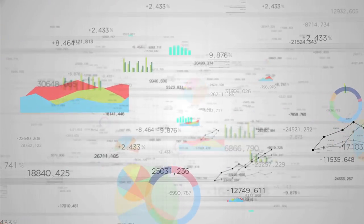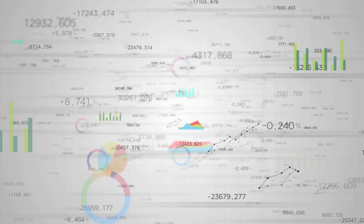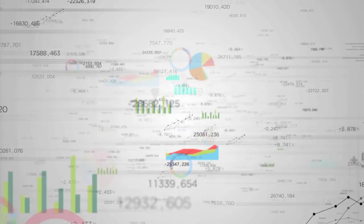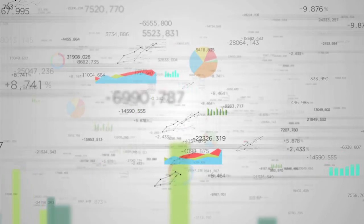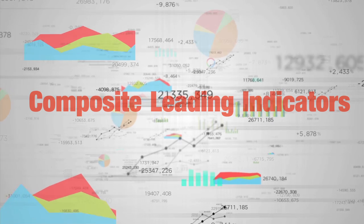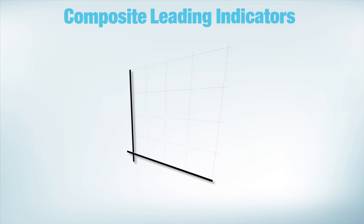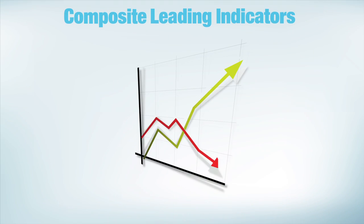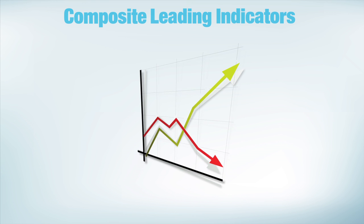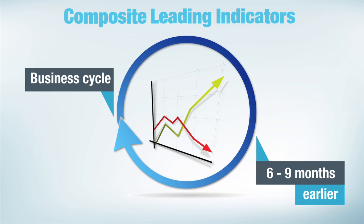Economists use a range of tools to understand short and medium-term trends in economic activity. One such tool developed at the OECD is the Composite Leading Indicators Series. The CLIs are composed of economic indicators whose ups and downs are similar to those of the business cycle, but which anticipate turning points six to nine months before they happen.